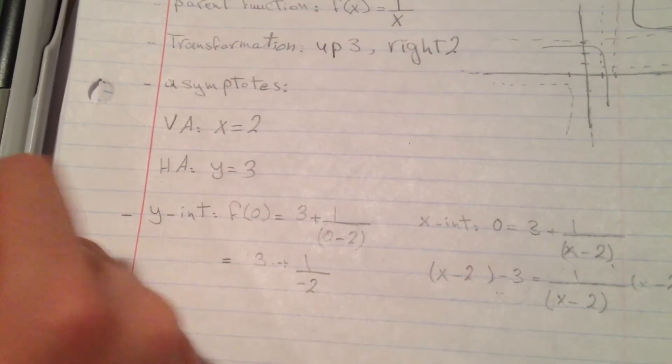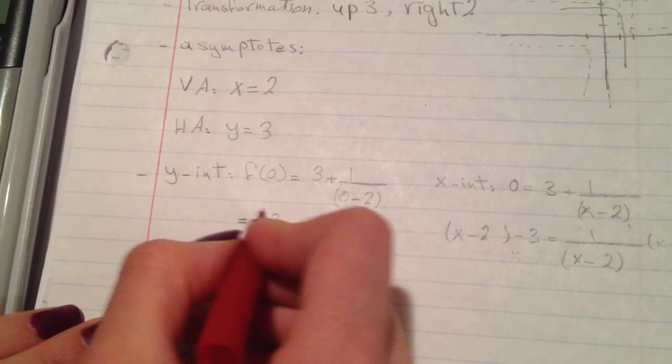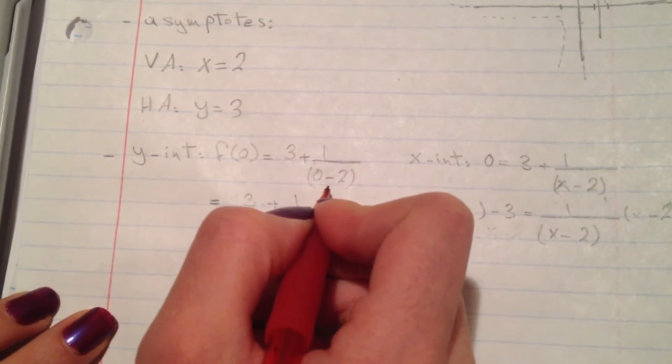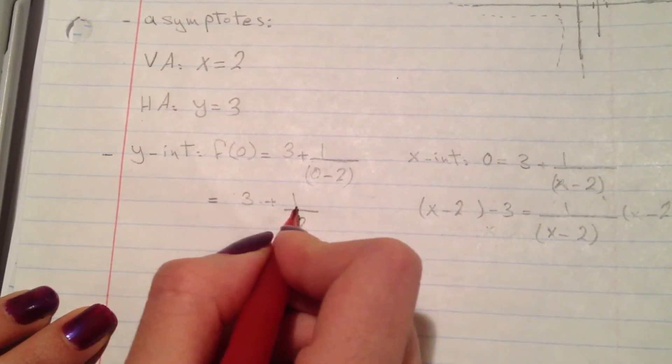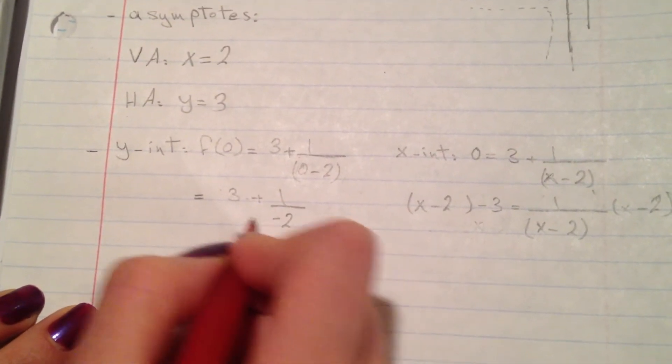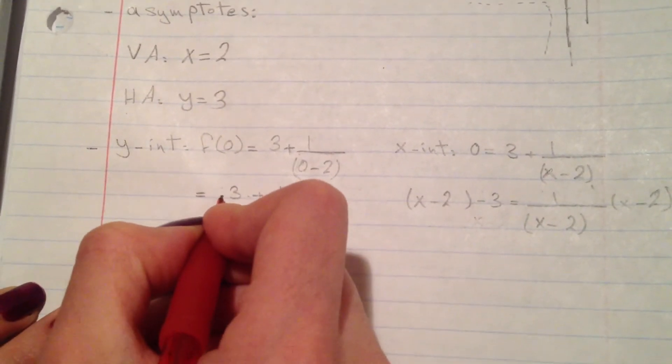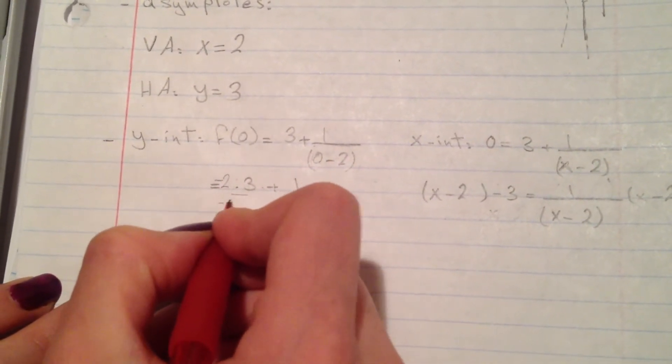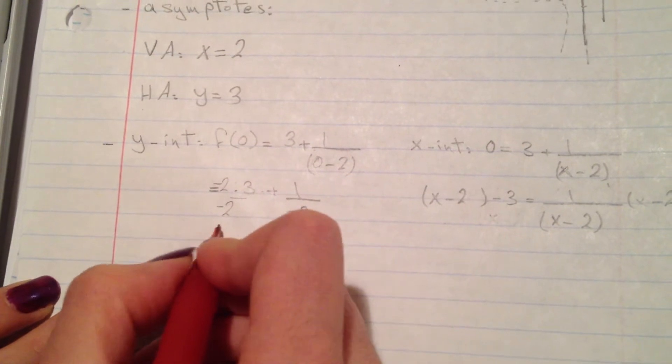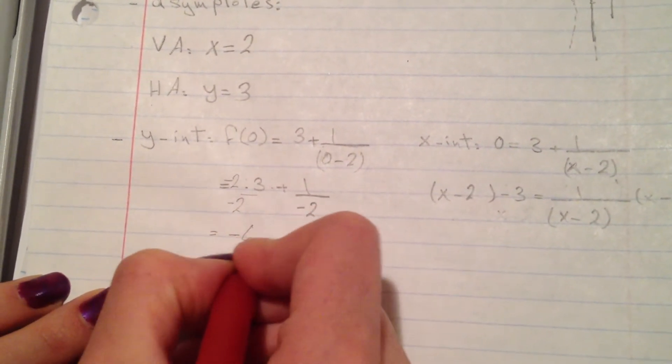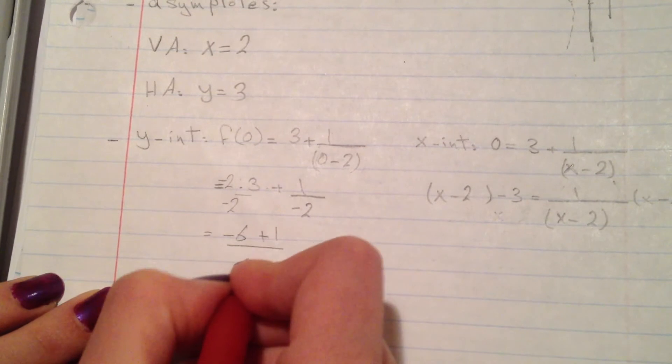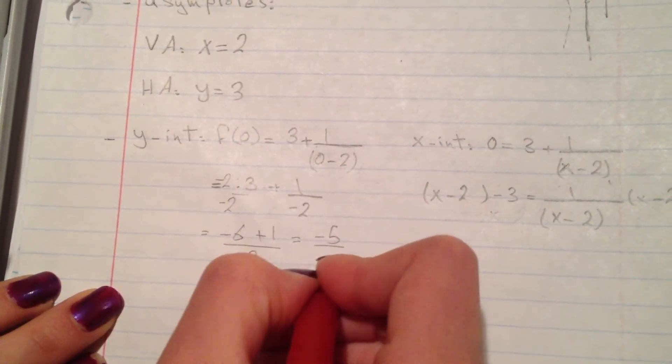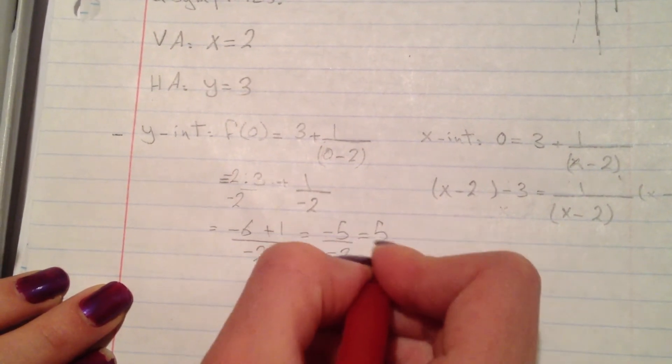Now we'll find the intercepts. The y-intercept: f(0) = 3 + 1/(0-2) = 3 + 1/(-2). Multiplying 3 by -2/-2 to get a common denominator: (-6 + 1)/(-2) = -5/(-2) = 5/2.